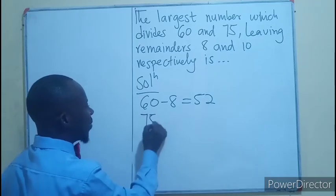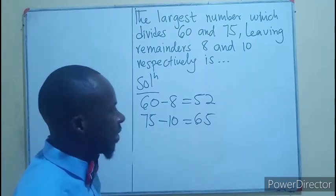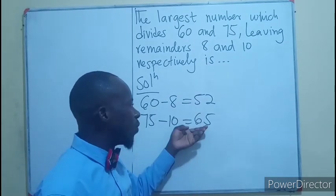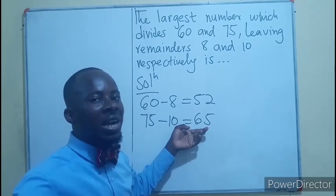And I will take 75 minus 10, that will give you 65. So there is a certain number that divides 52 and at the same time divides 65. What are we looking for? We're looking for the highest common factor.